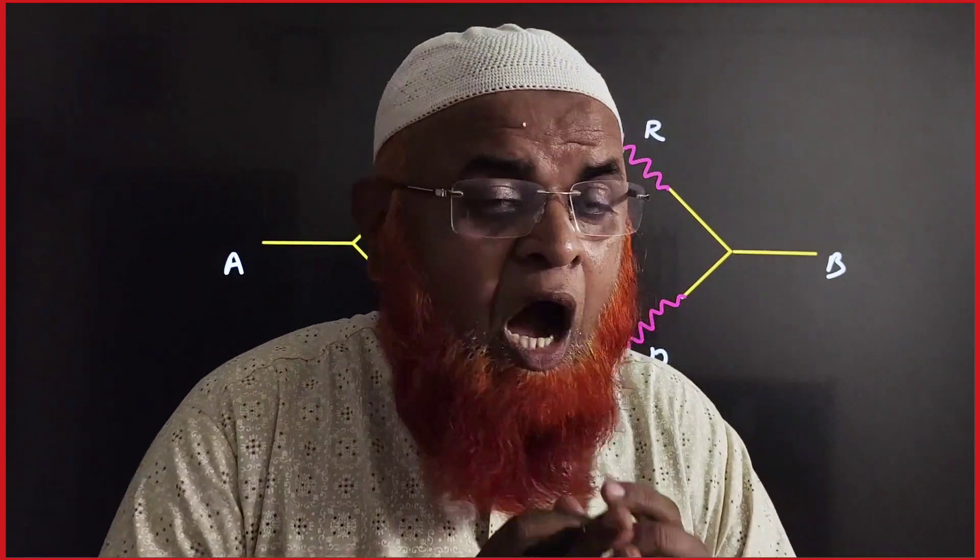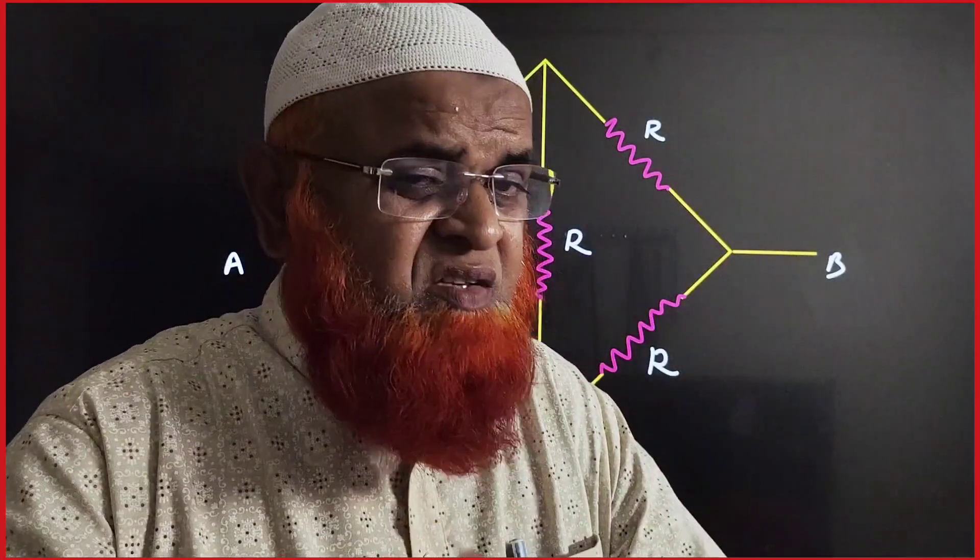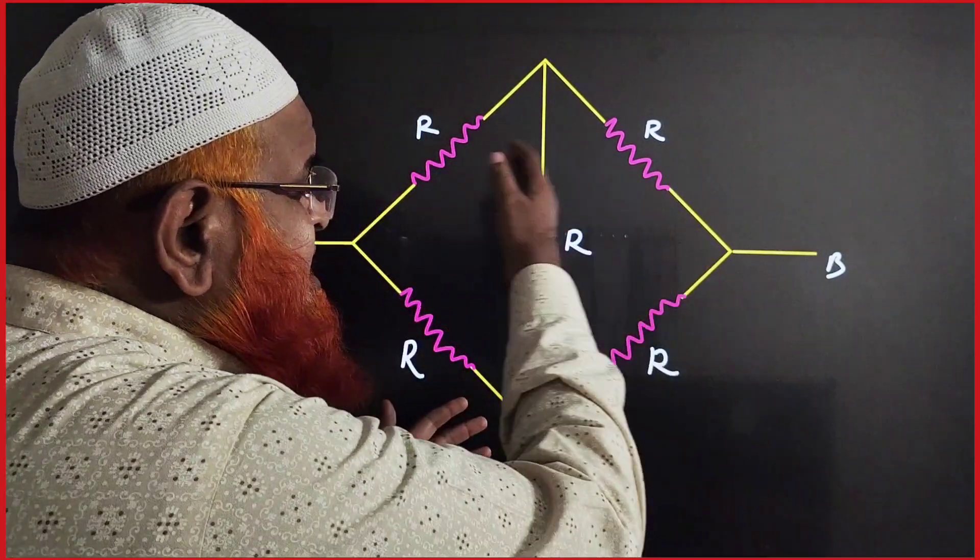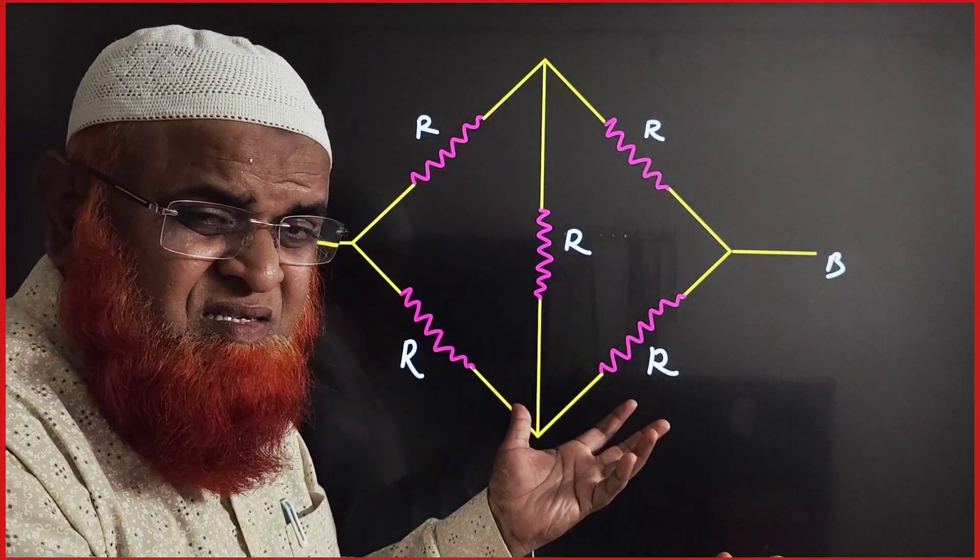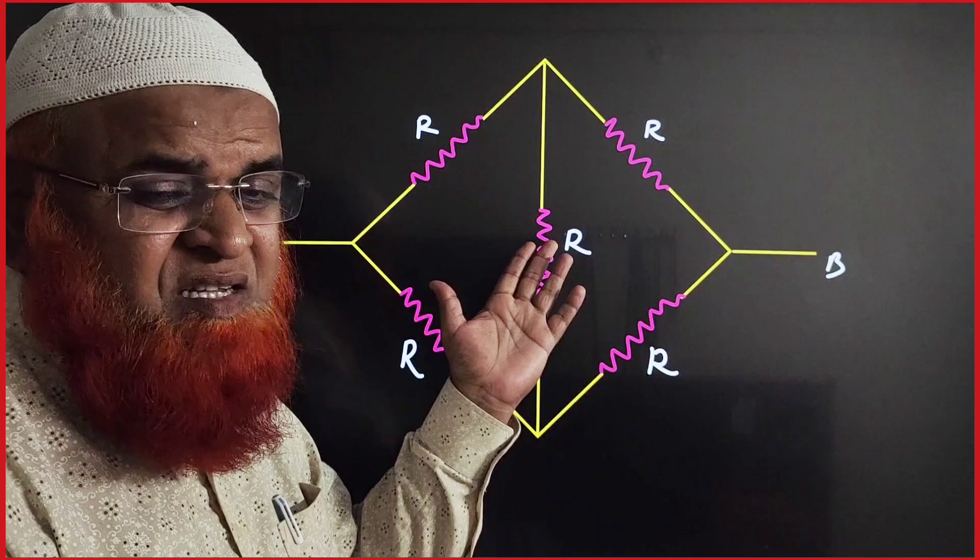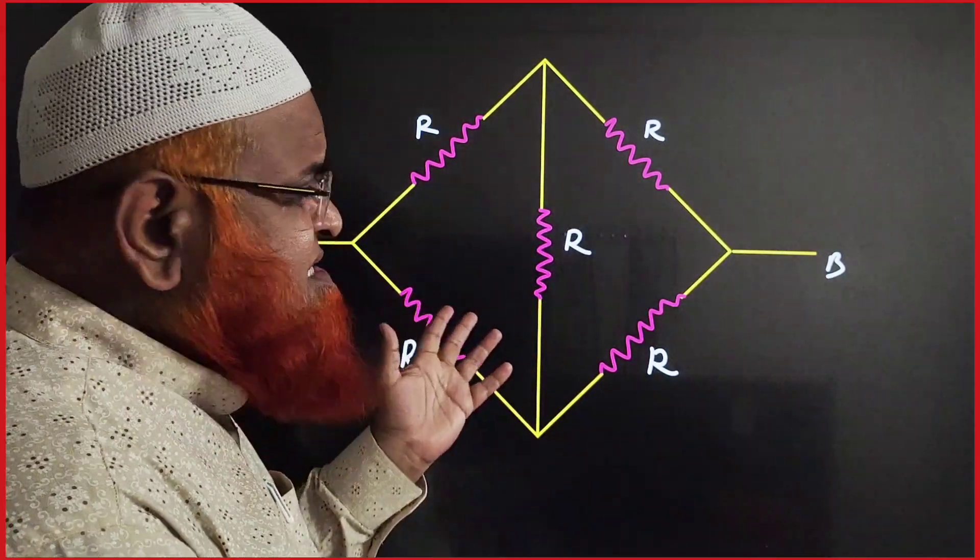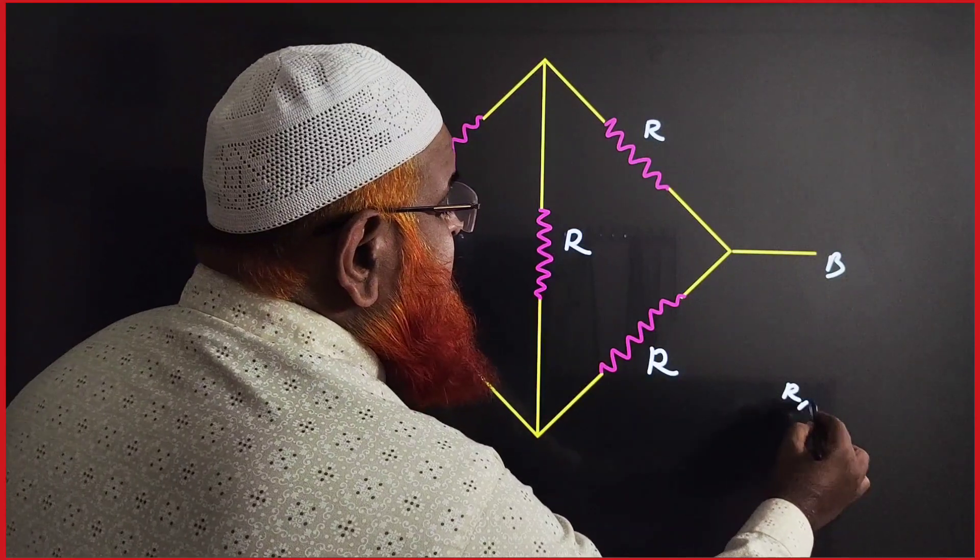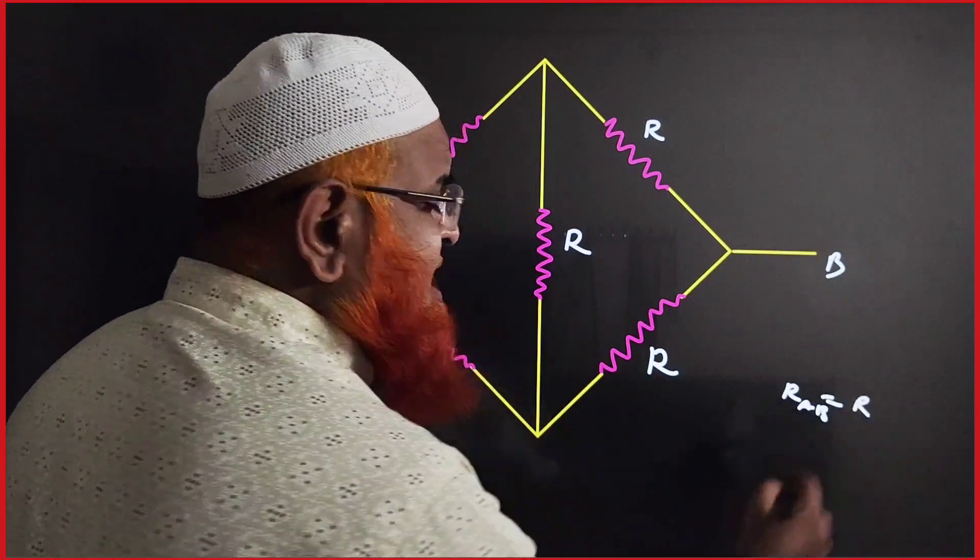Dear students, let me discuss how many types of Wheatstone bridges are there in just a single minute. You can see here there are all resistors having the same resistance R only. That means this is a balanced Wheatstone bridge. Resistance across AB is directly taken as R as the answer.